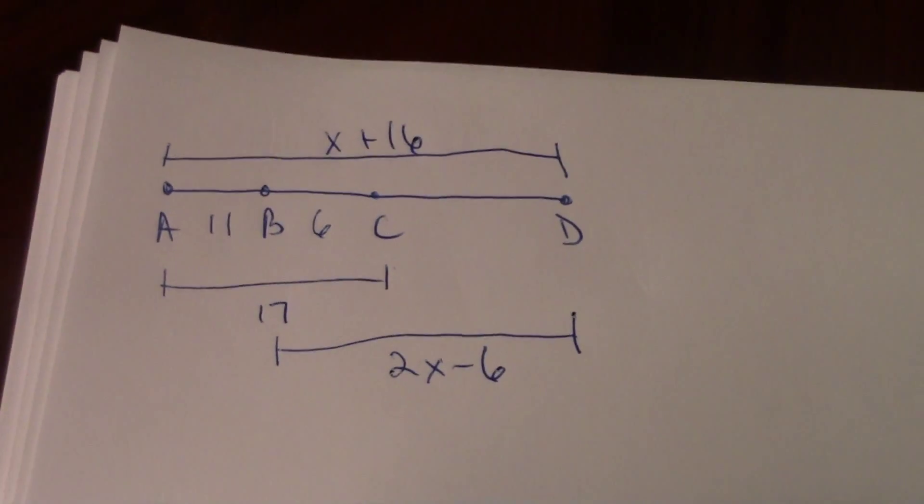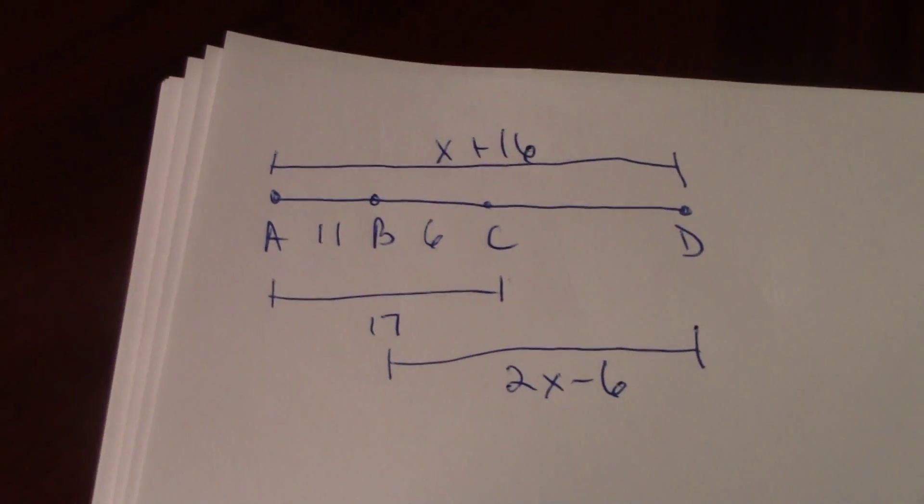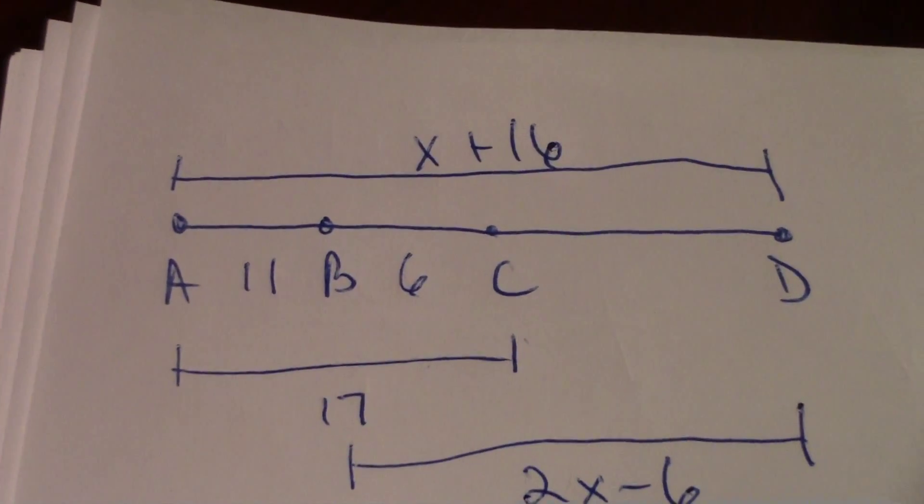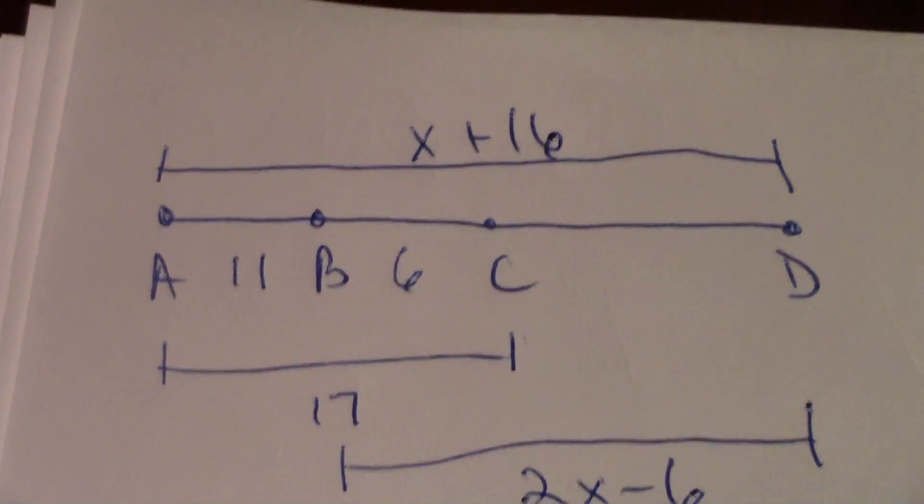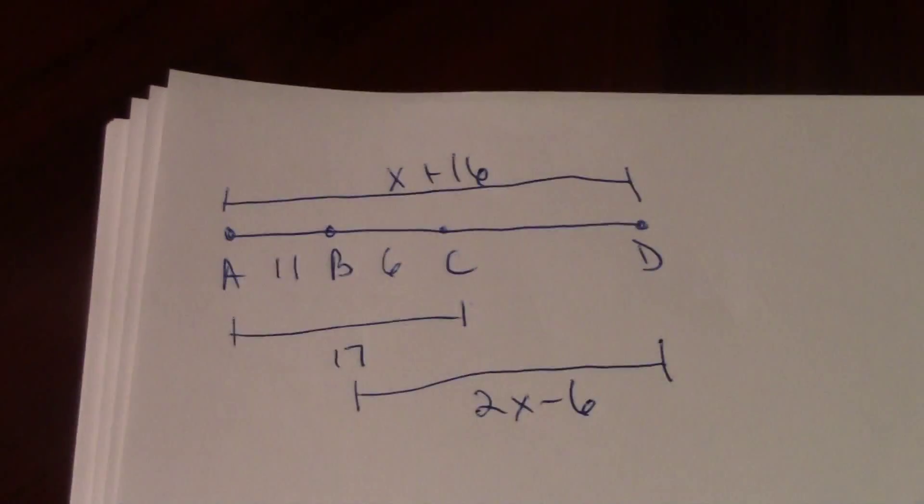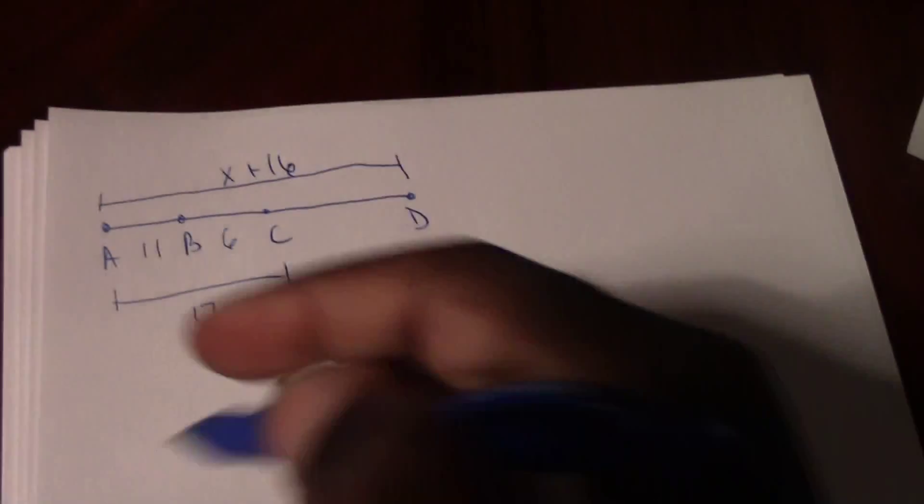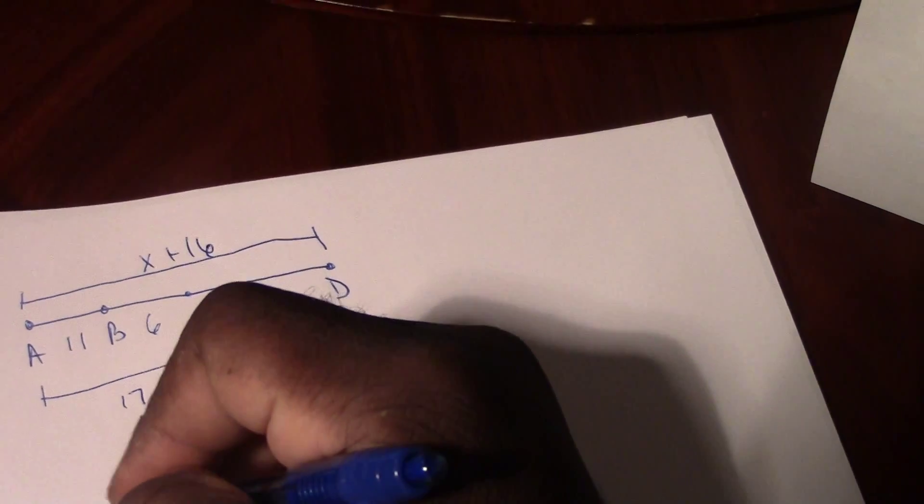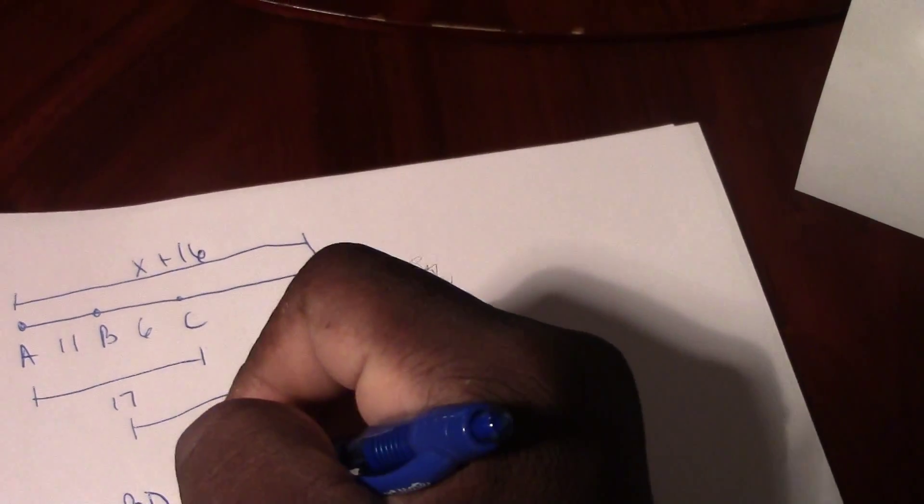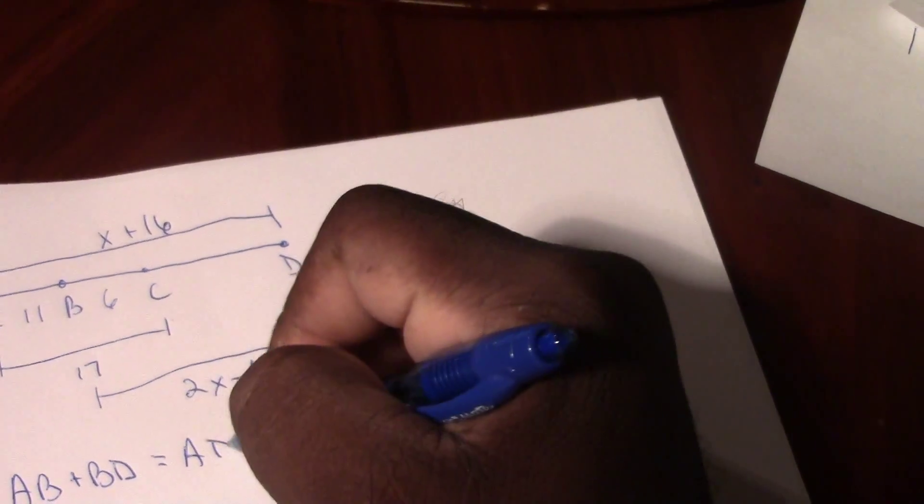Now, if AB is 11 units, then that means that AB plus BD is going to equal AD. Let's go ahead and write that down: AB plus BD equals AD.